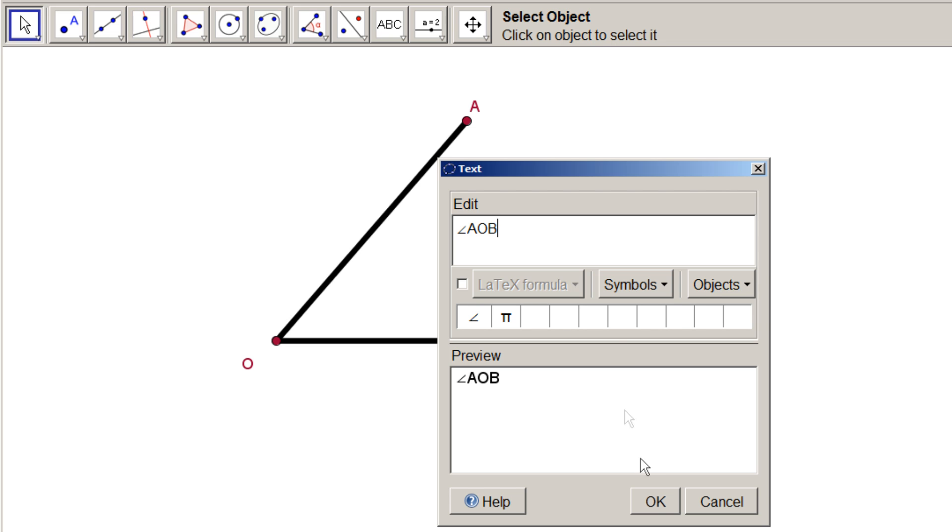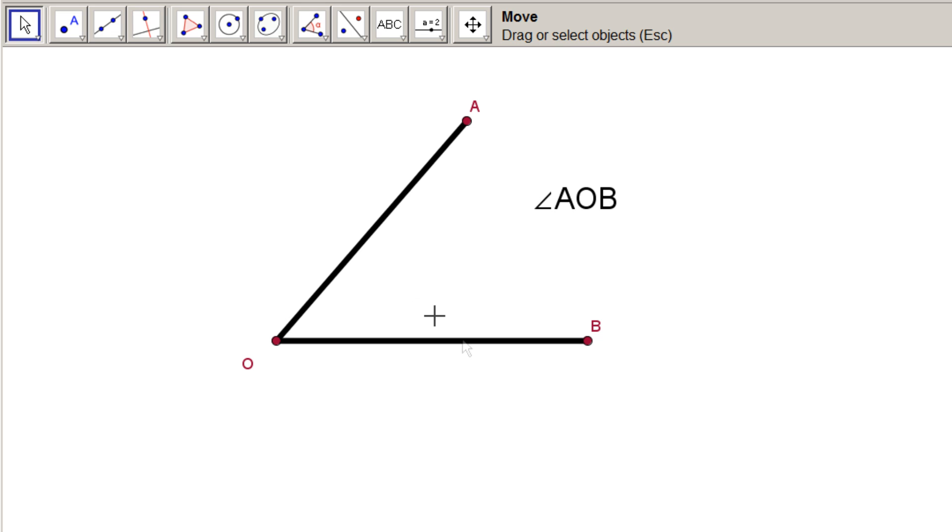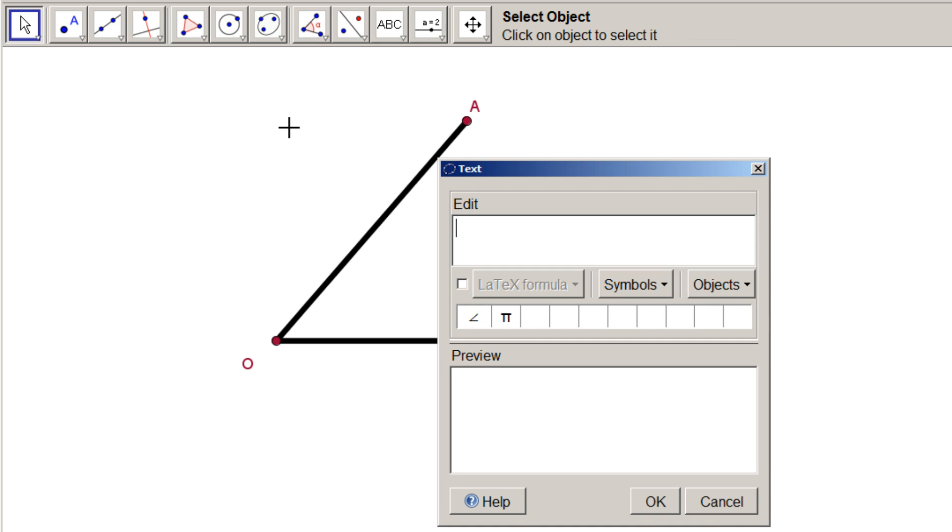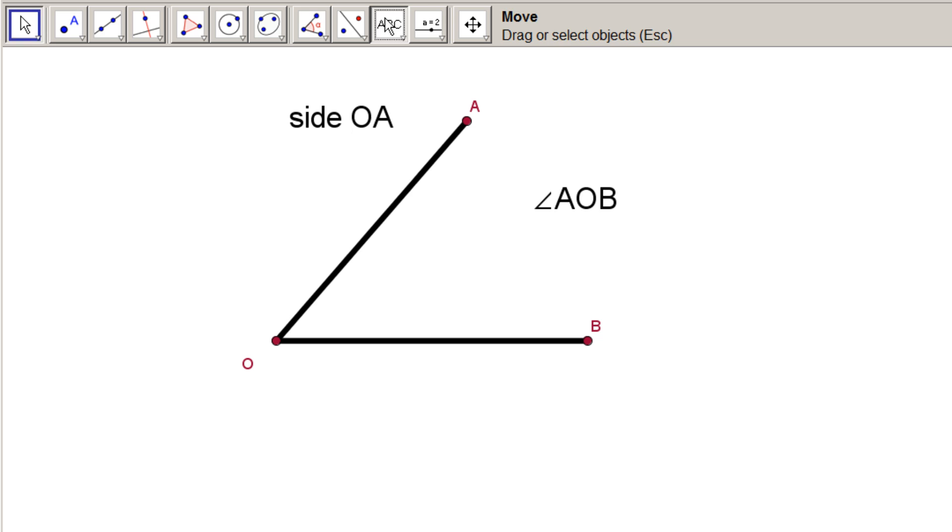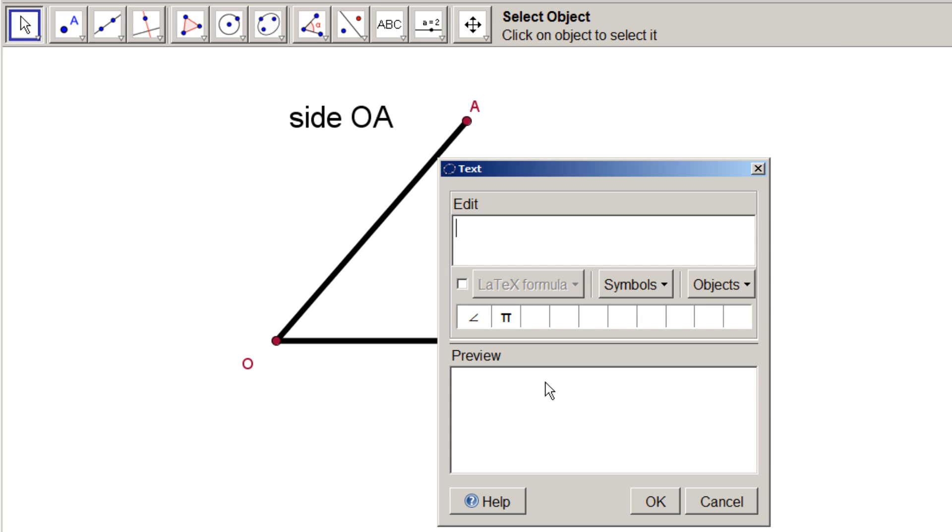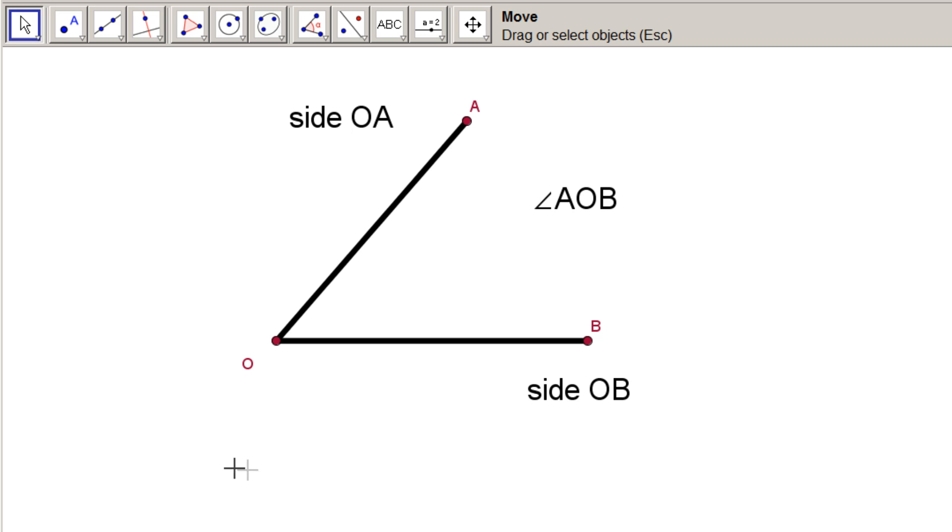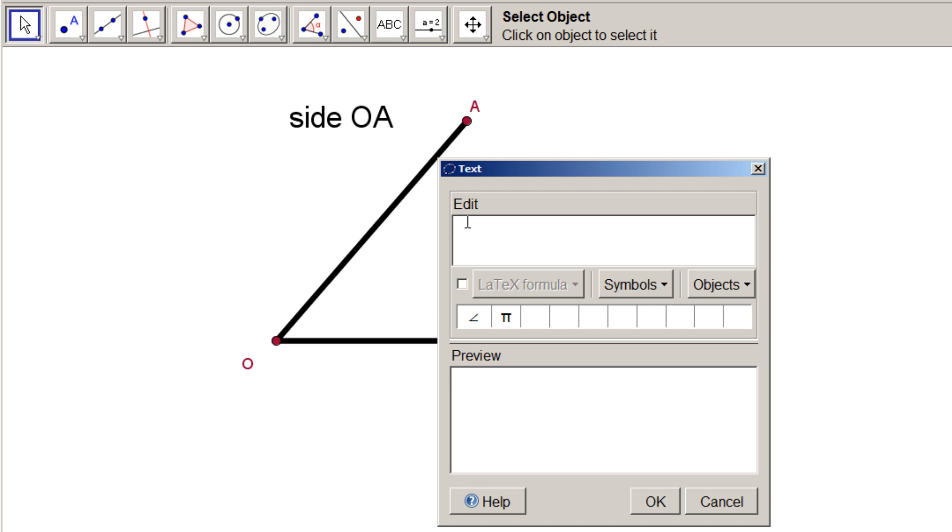While we're at it, let's add the names of the arms, the sides, OA and OB. Choose the text icon ABC again. Click to one side of OA. Enter Side OA. Press OK. Choose the text icon ABC again. Click to one side of OB. Enter Side OB. Press OK. And don't forget the vertex at O. Choose the text icon ABC once more. Click below and to the left of the O. Enter Vertex at O. Press OK.